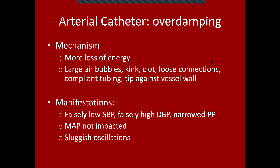Loose connections in your arterial line — if any connections are not well attached and losing pressure — can certainly cause overdamping. More compliant tubing than normal can also cause it. And if the tip of the arterial catheter is up against a vessel wall, that can dissipate energy prematurely and cause overdamping.